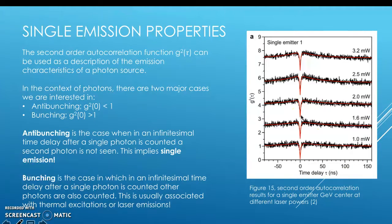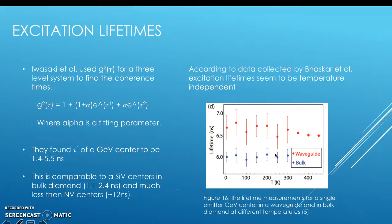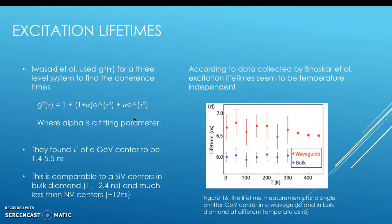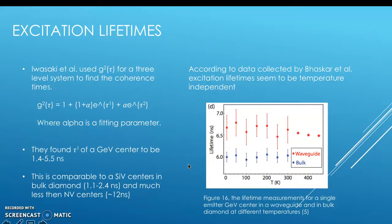The graph shown here indicates anti-bunching behavior because the value is less than one at zero. Excitation lifetimes can be calculated empirically using a fitting formula, and Iwasaki finds that T1 of a germanium vacancy center is about 1.4 to 5.4 nanoseconds, comparable to silicon vacancy centers and much less than NV vacancy centers, which are around 10 to 12 nanoseconds. According to data from Bhaskar at Harvard, excitation lifetimes appear to be temperature independent, though overall lifetimes are slightly greater, likely due to the preparation of the germanium single emitter within those samples.